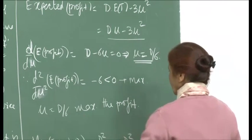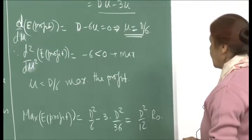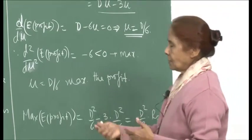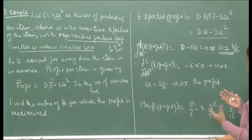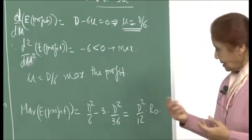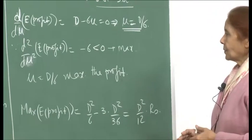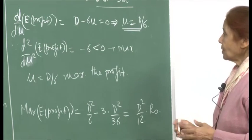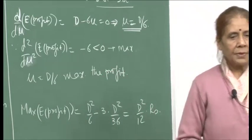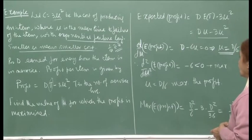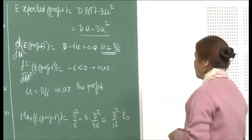So μ = d/6 maximizes the expected profit, and the maximum profit is d²/12 rupees. This gives you a feeling for the exponential failure law and the kind of problems that arise. The level is kept basic — it is just a glimpse of how probability tools can be used to answer questions about day-to-day operations of systems and service systems.